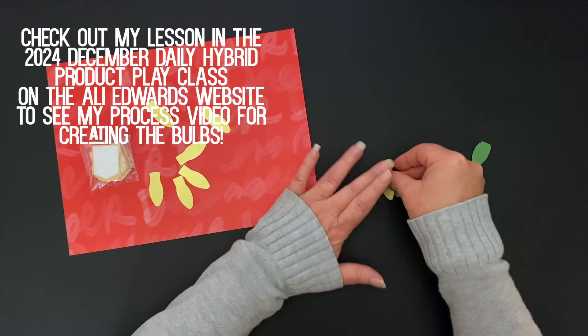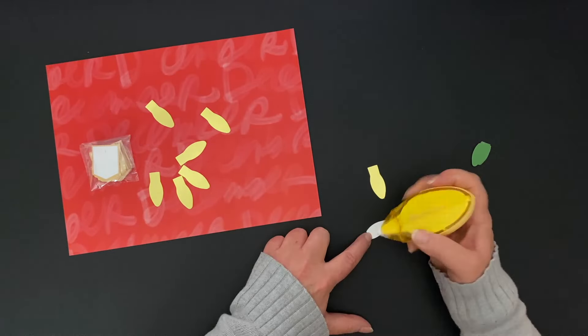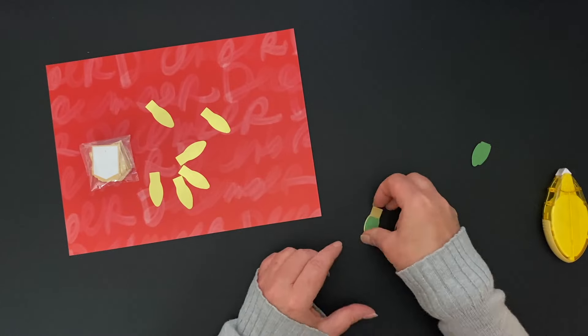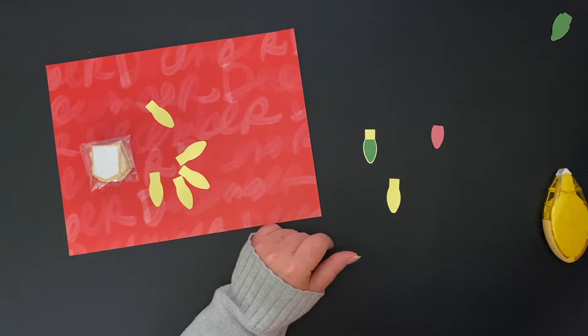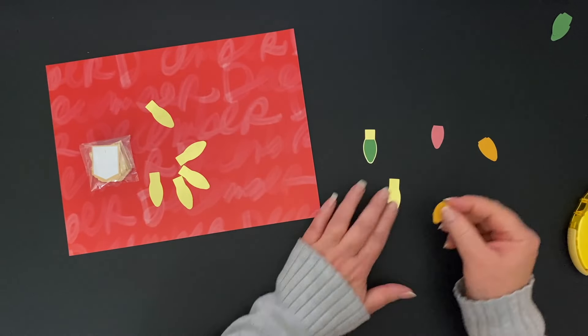I'm going to use my rolling adhesive here to adhere the colored part to the gold part of the bulbs. I have several different colors that I printed out and cut through my Silhouette.